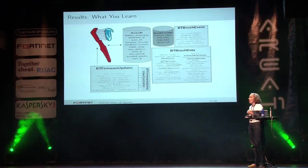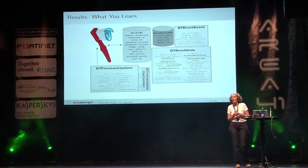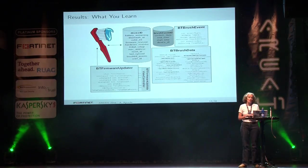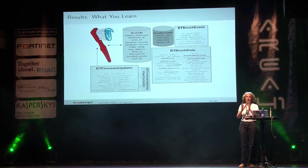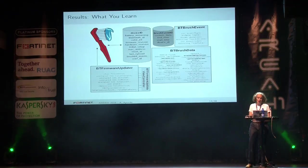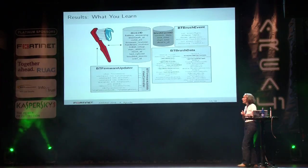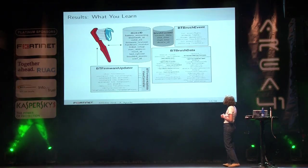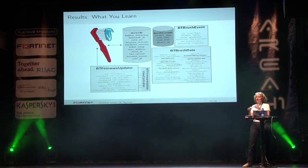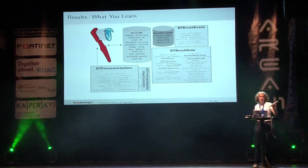What did we learn? On the bottom left there's a class called BT firmware updater — obviously Bluetooth firmware updater — meaning we can change the firmware on the toothbrush. The firmware is just a sequence of bytes being sent, and they check if all bytes have been pushed to the toothbrush. There's an over-the-air service and an over-the-air control point. In the BT brush data class on the right, we learn there's an accelerometer and a gyroscope inside. We didn't even have to open it, and opening it risks ruining the object.